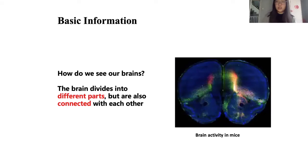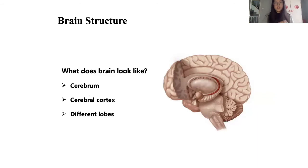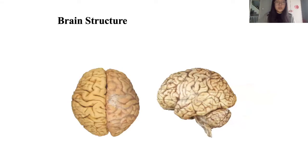Here's a picture of brain activity in mice. If you look at the brain from the side, this is what you see. The cerebrum, cerebral cortex, and different lobes are the main things we're going to talk about. On the left is how you see the brain from top to bottom, and on the right is how you see the brain from the side.